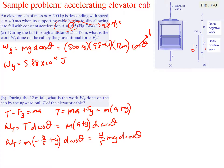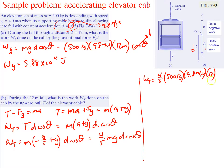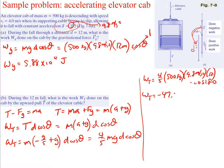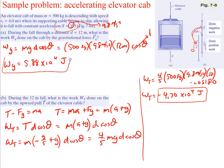Now plugging in everything: work from tension equals four-fifths times 500 kilograms times 9.8 meters per second squared times 12 meters times cosine of 180 degrees. The angle is 180 degrees because there's 180 degrees between the tension and the displacement. Solving this out, work from tension is negative 4.70 times 10 to the fourth joules — negative work done by tension, while we had positive work done by gravity.